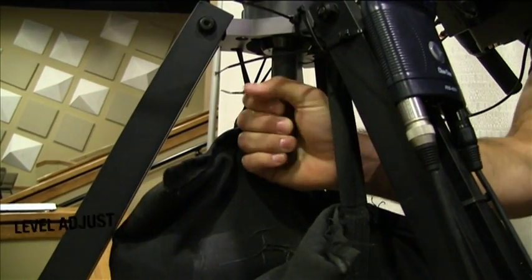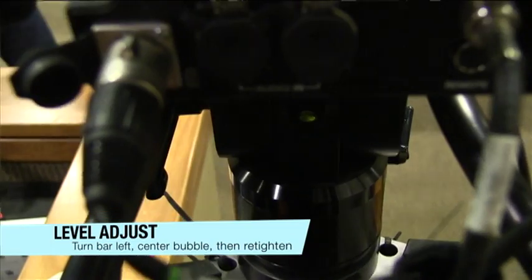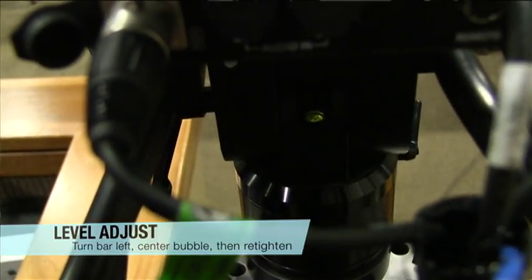If you need to adjust the camera's level, turn the bar below the tripod clockwise, center the level bubble, and then re-tighten.